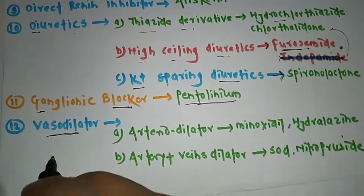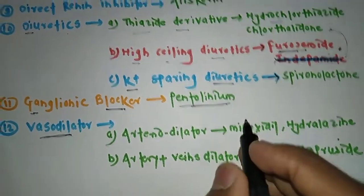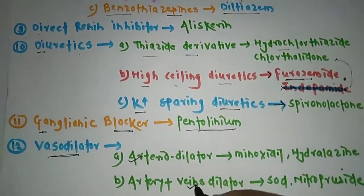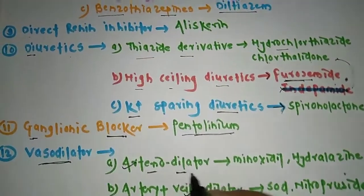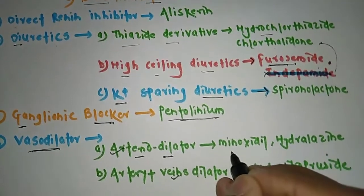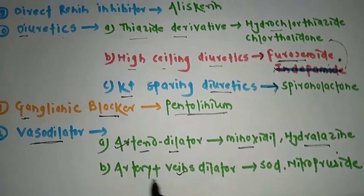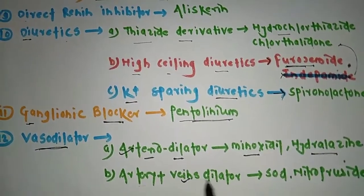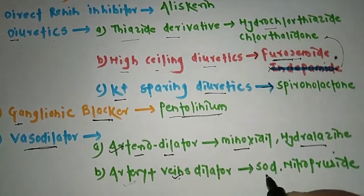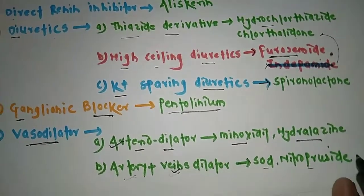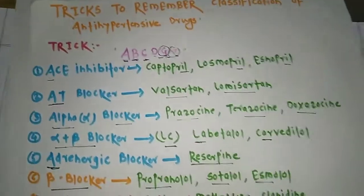Finally, V stands for Vasodilator. The body has arteries and veins, so there are separate drugs acting on each. The first type is Arteriolar dilator — examples are minoxidil and hydralazine. The second type acts on both artery and vein — example is sodium nitroprusside. This completes the anti-hypertensive drug classification.